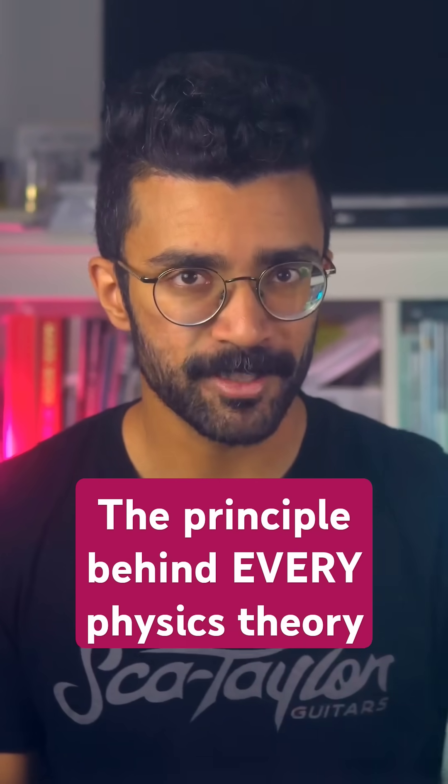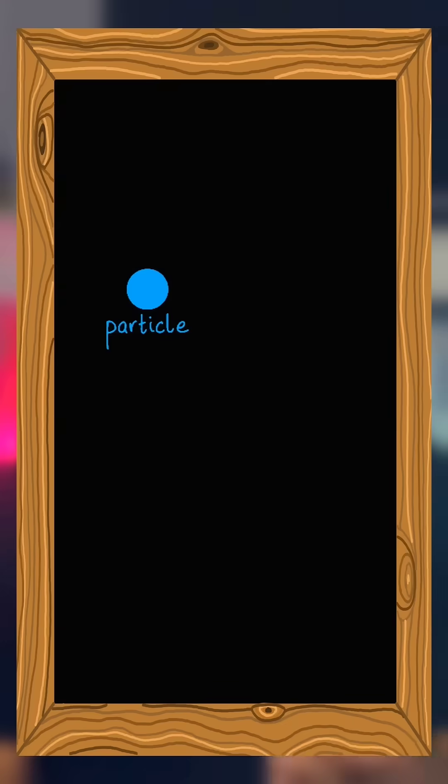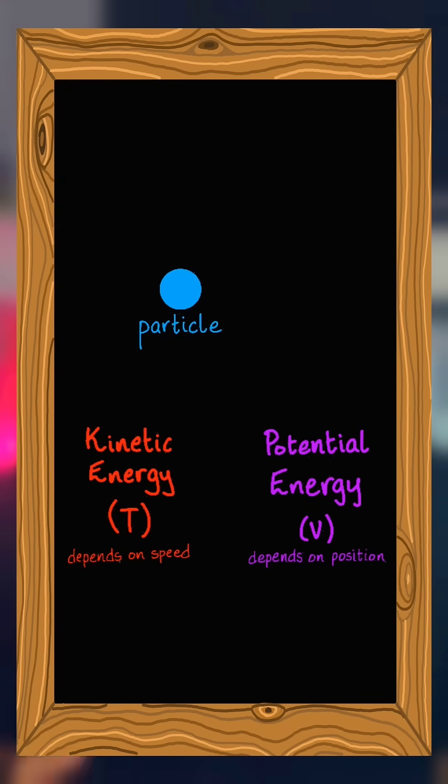Let's think about a really simple system, a particle moving through space. This particle has some amount of kinetic energy due to its motion, and it has potential energy if it interacts with stuff around it.